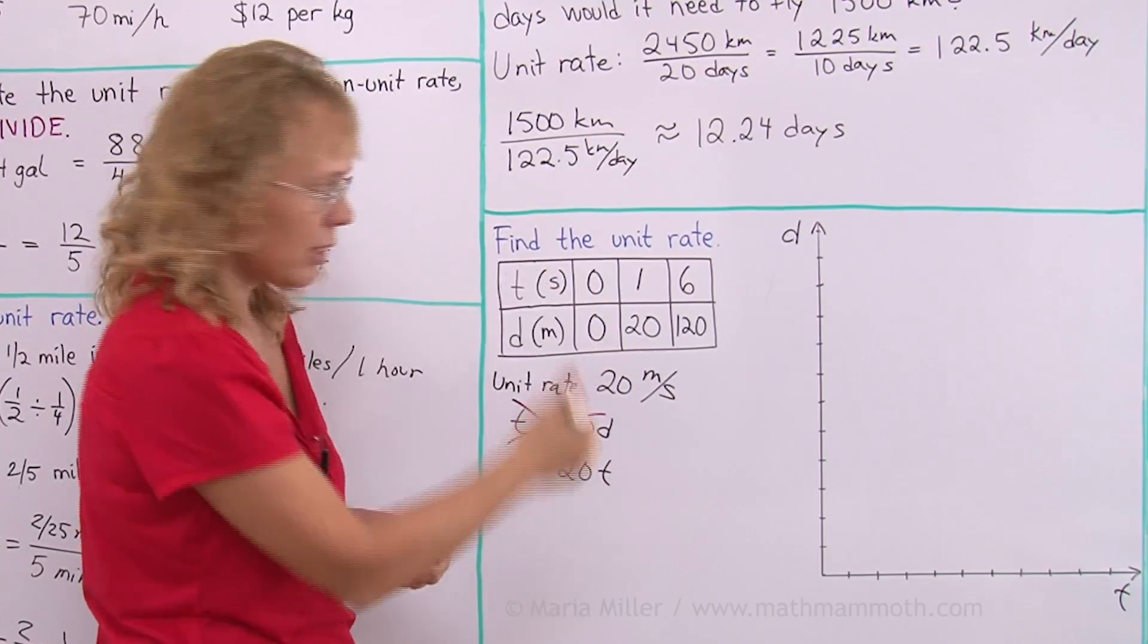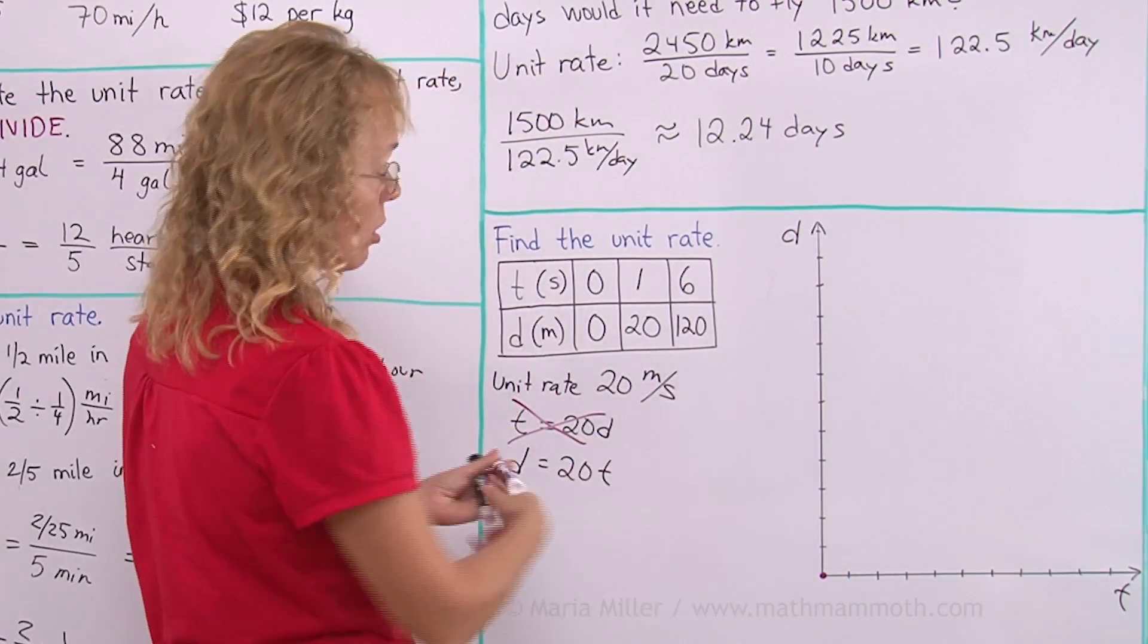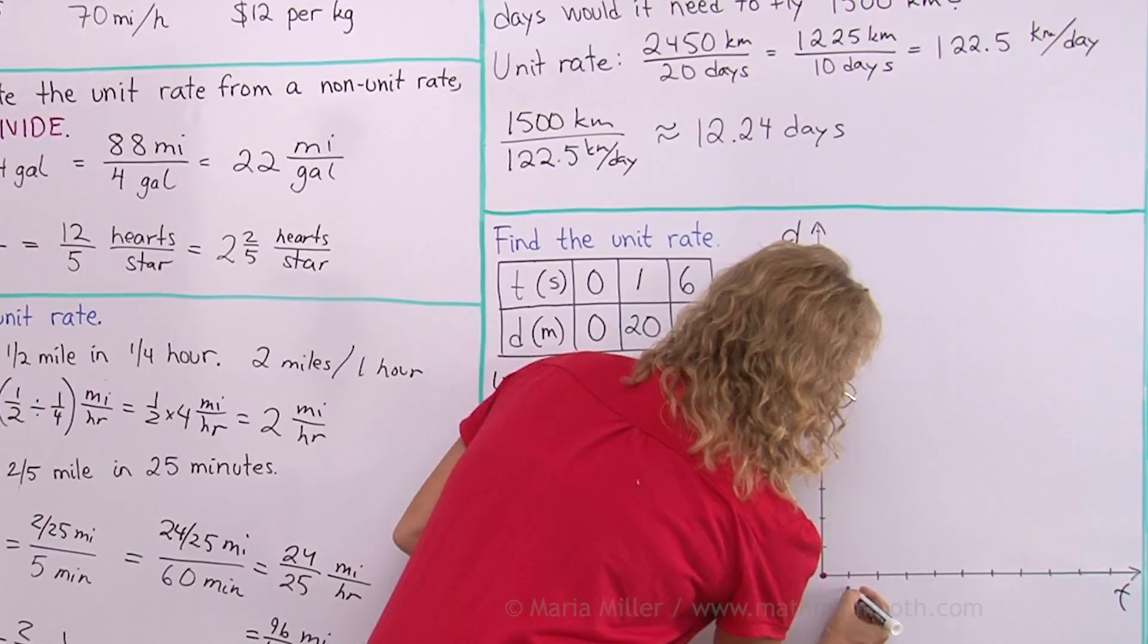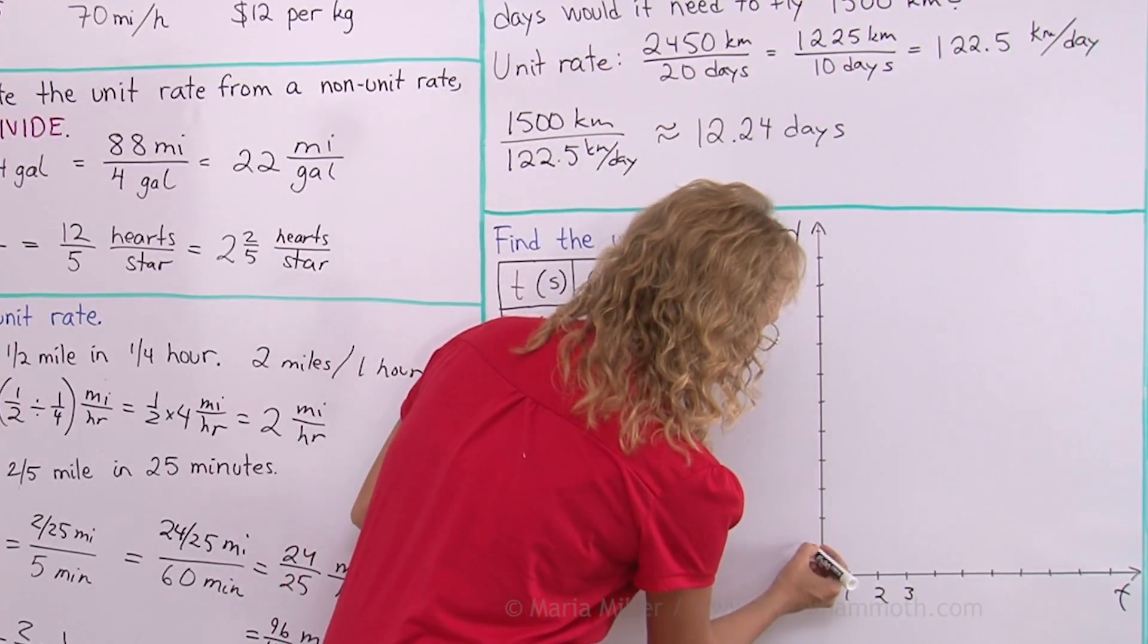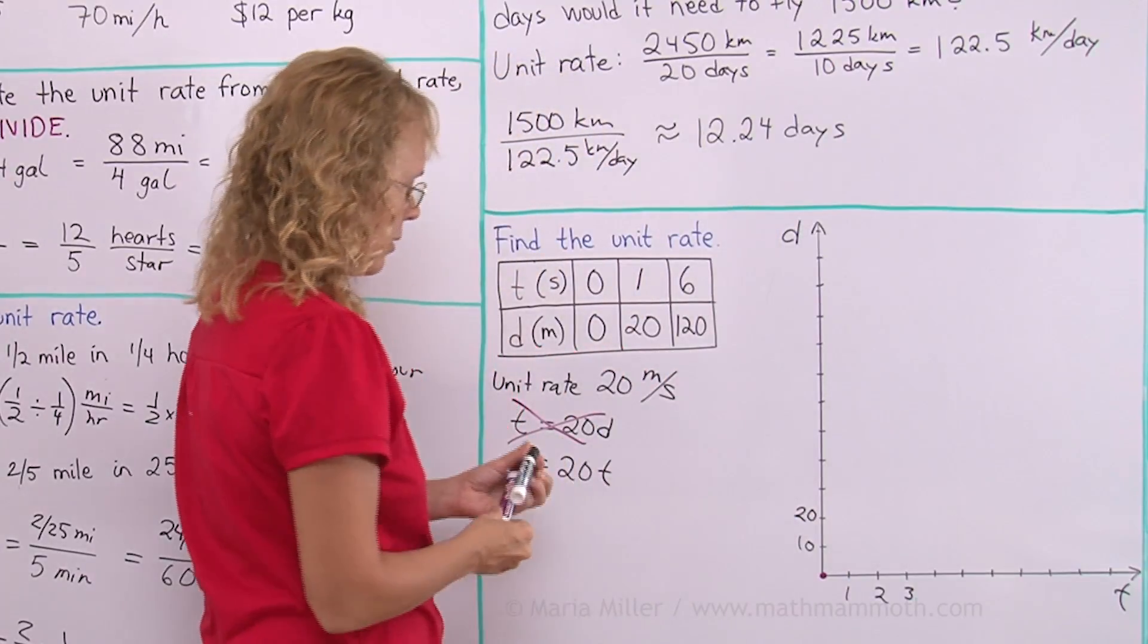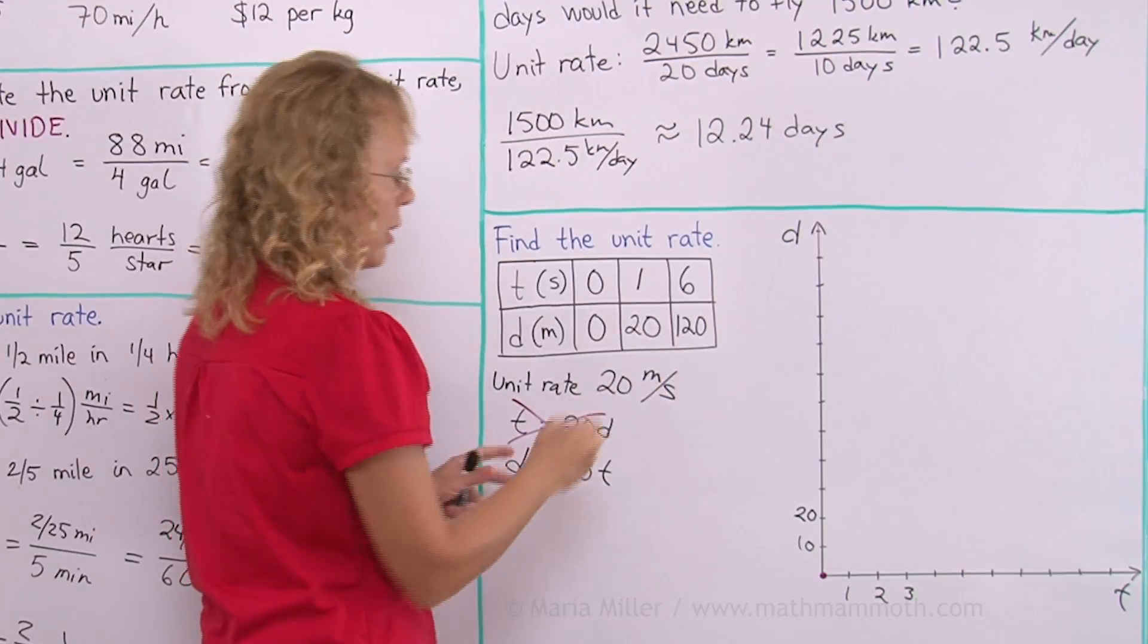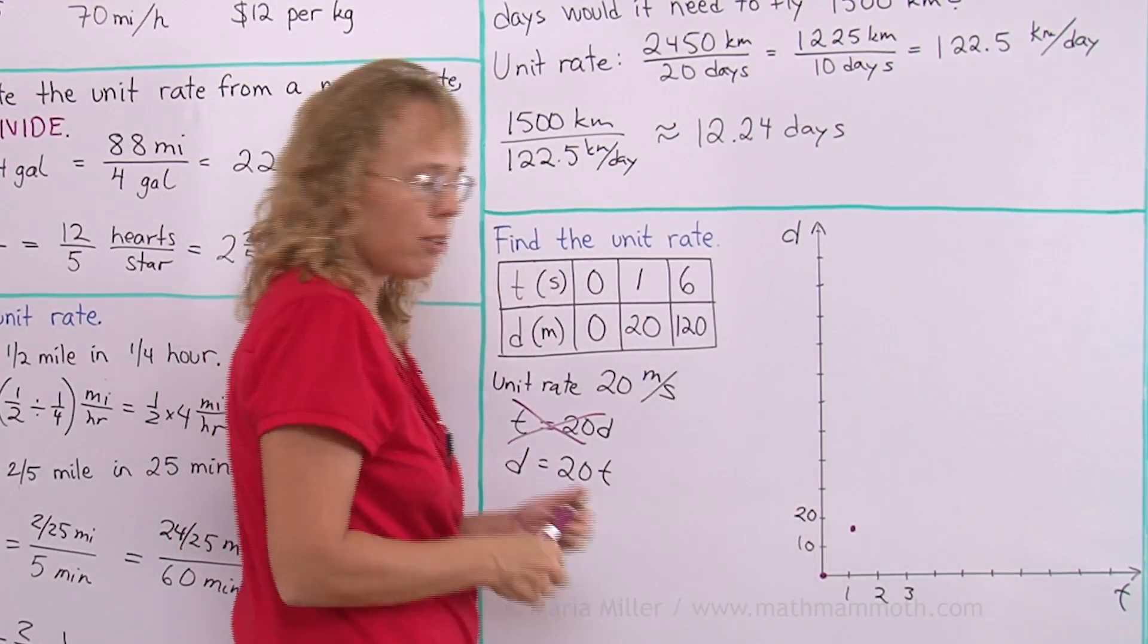I need two points to plot it, right? Origin is 1, 0, 0. And then I need to choose a scale too for the axis. So 1, 2, 3 would work here. And maybe let's say if I put 10 here, 20 here. And then this unit rate 1, 20 will work as my second point. And now plot the line.